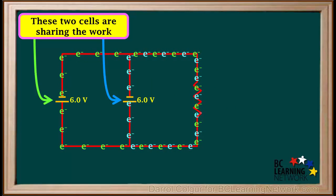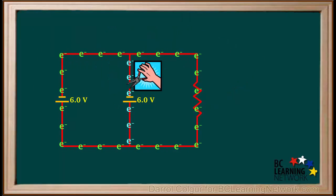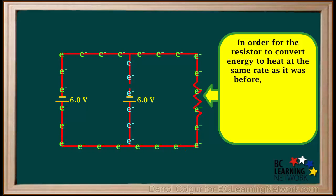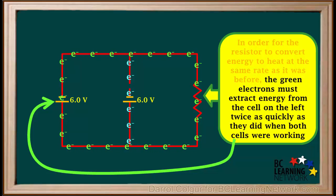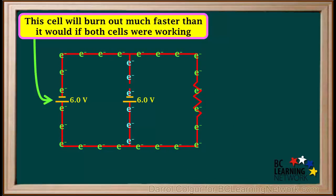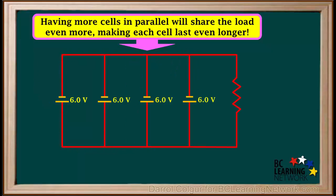So the two cells are sharing the work — each cell is supplying energy at half the rate the resistor is using it. Now we'll cut the wire from the cell on the right, closing off that loop. In order for the resistor to convert energy at the same rate, the green electrons must extract energy from the left cell twice as quickly. The left cell is doing all the work and losing energy faster, so it will burn out much more quickly. When two cells in parallel are both operating, each cell loses energy more slowly and lasts longer. Having more cells in parallel shares the load even more, making each cell last even longer.